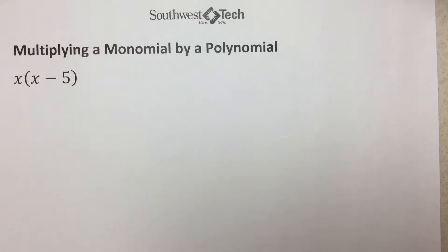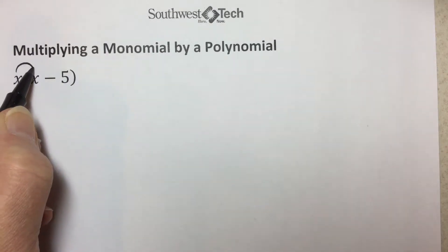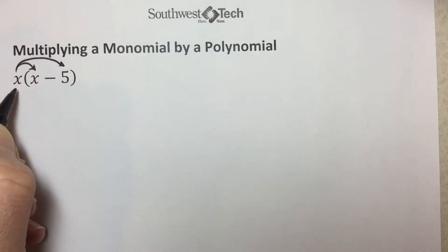The product of a monomial and a polynomial is found by multiplying each term of the polynomial by the monomial. You can think of this as another version of the distributive property. Everything inside the parenthesis is going to be multiplied by this quantity.